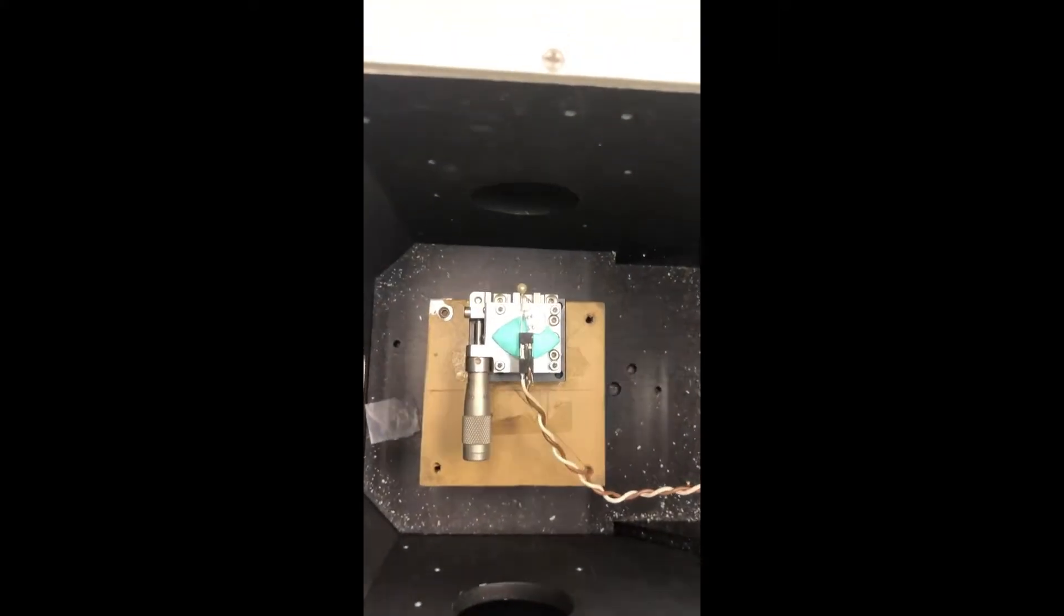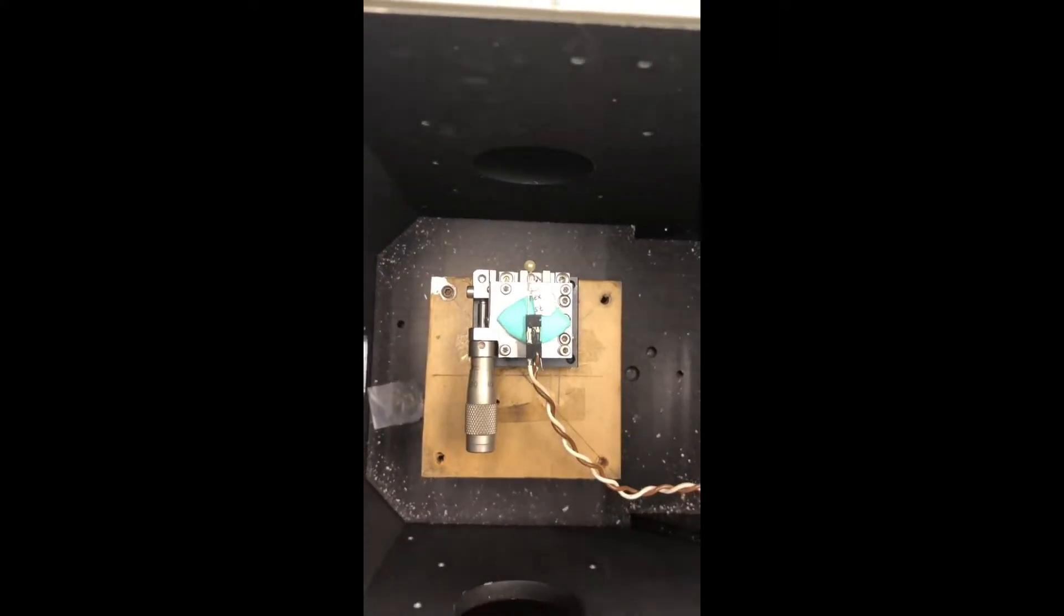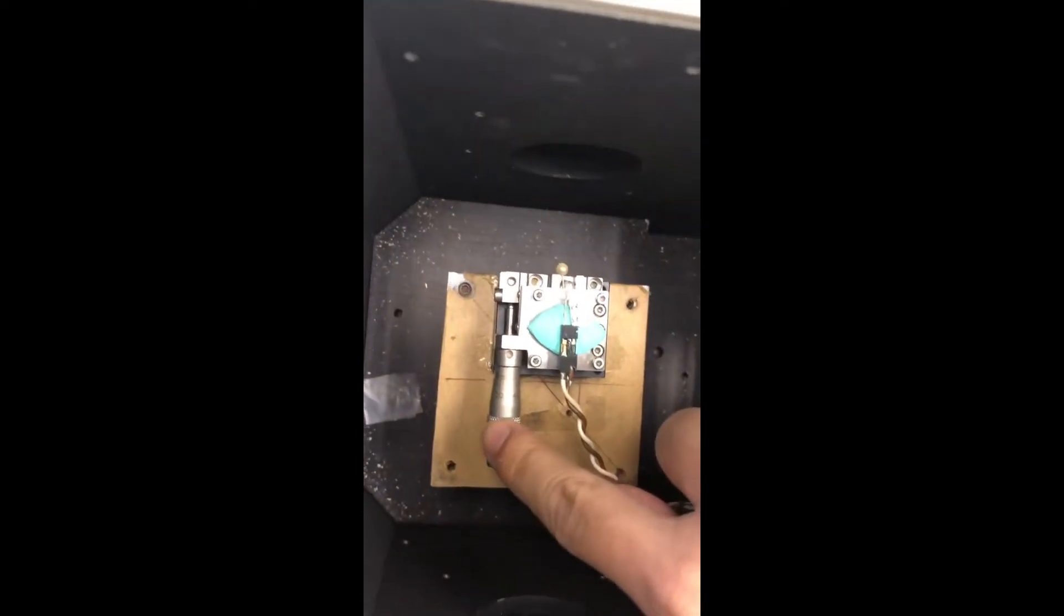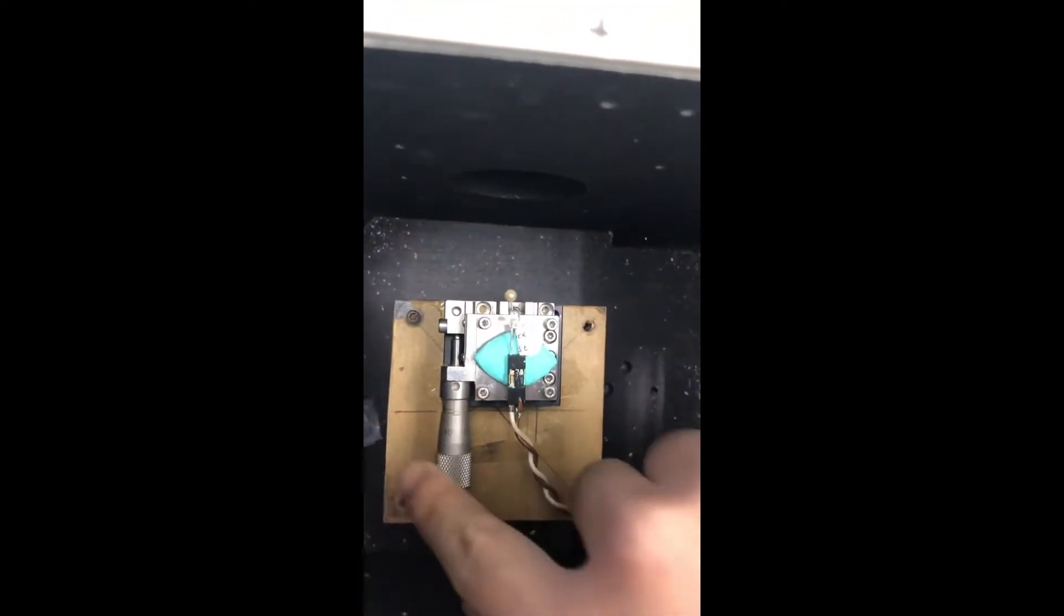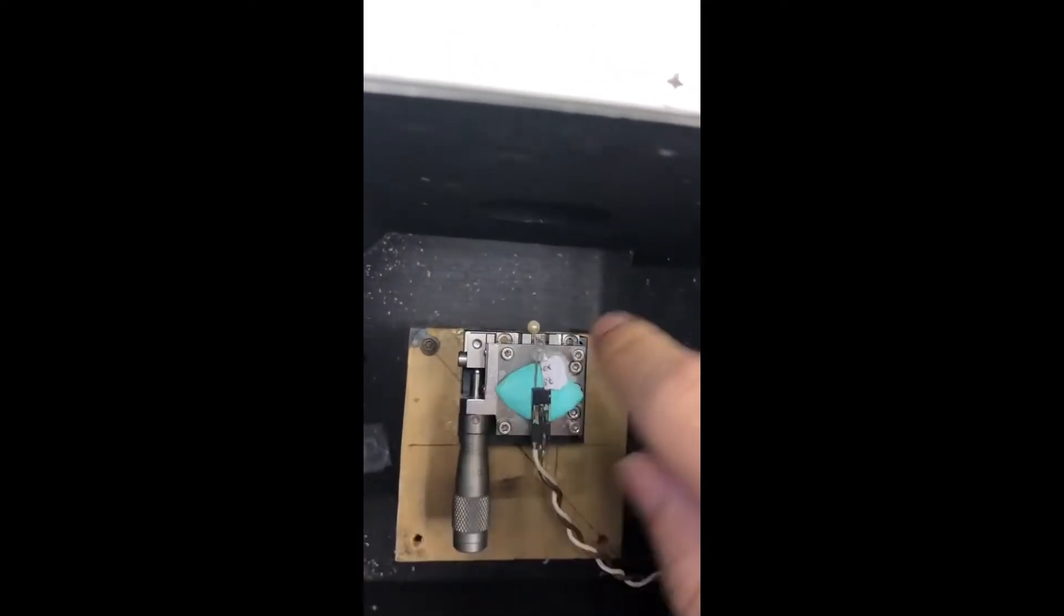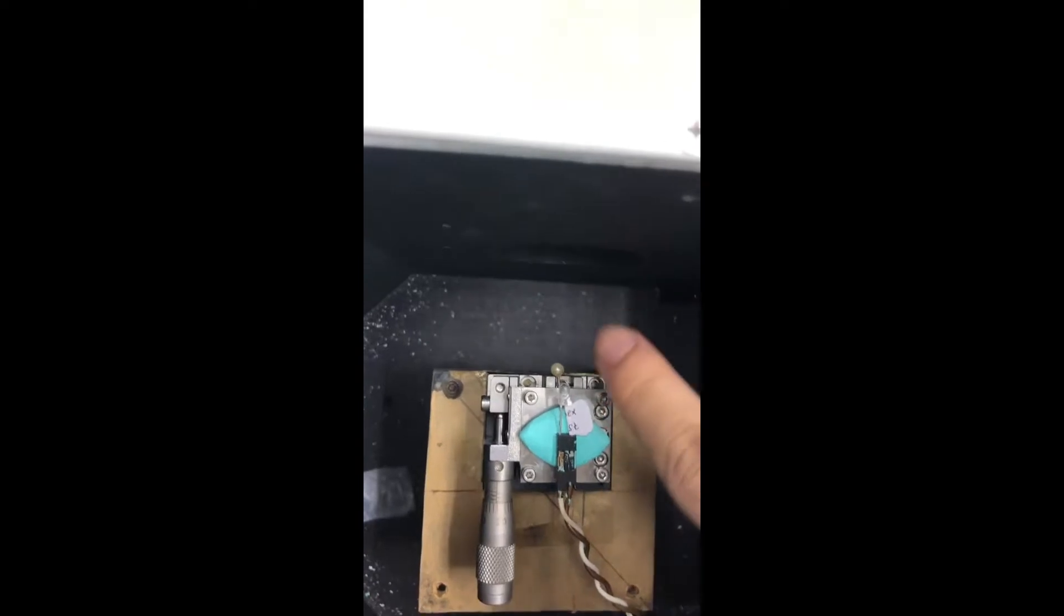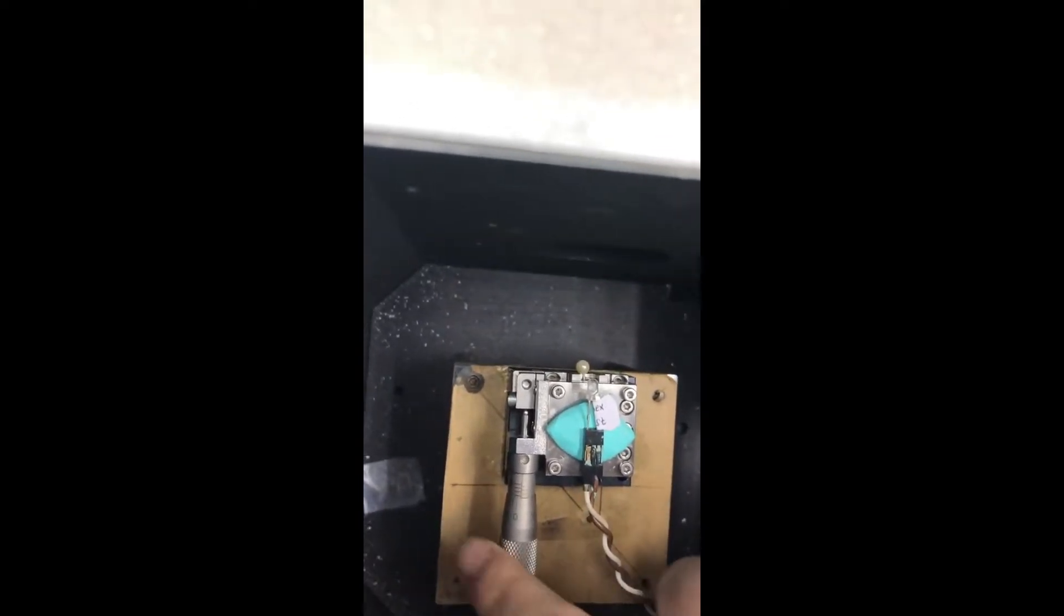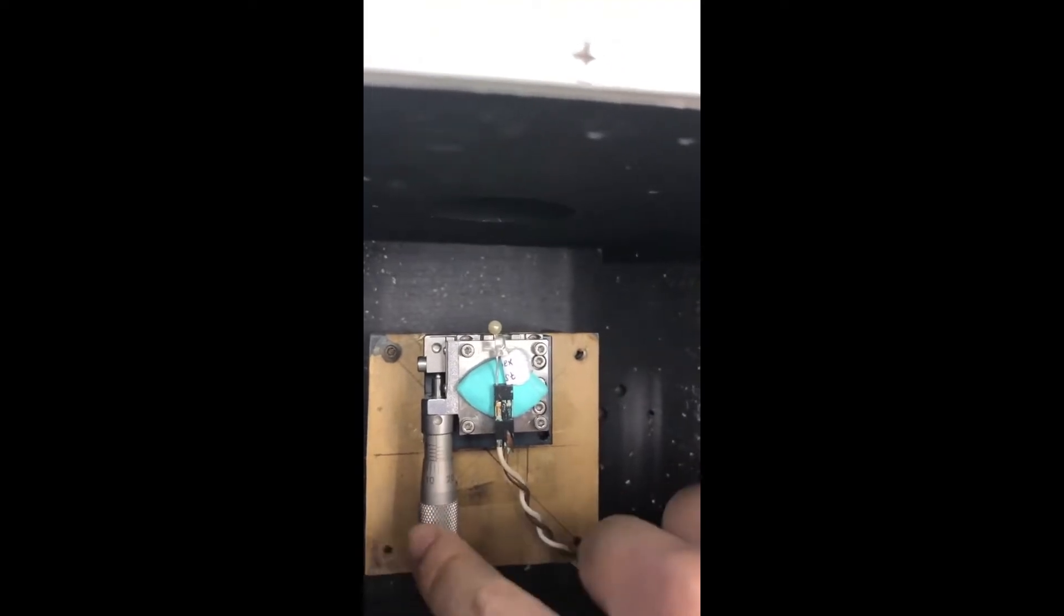Now after connecting the LED right here, as you can see here, these things right here are to adjust the position of the LED. You can either move it closer to the screen right here or move it far away from it. For example, here I put it in the middle.